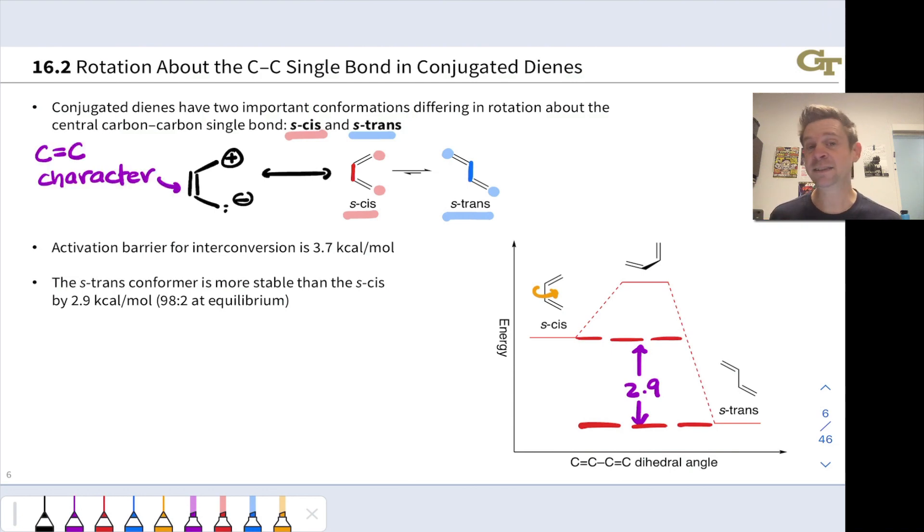That C-C double bond character actually inhibits or provides an activation energy for rotation. And that comes out to, if we measure it, about 3.7 kilocalories per mole. And that's this activation barrier here on the diagram.